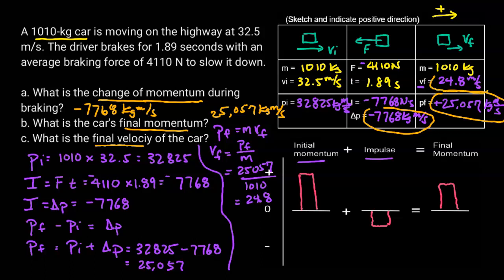Then we're looking for the final momentum — and the final momentum will be 25,057 kilograms meters per second. And lastly, we have the final velocity, which is 24.8 meters per second.